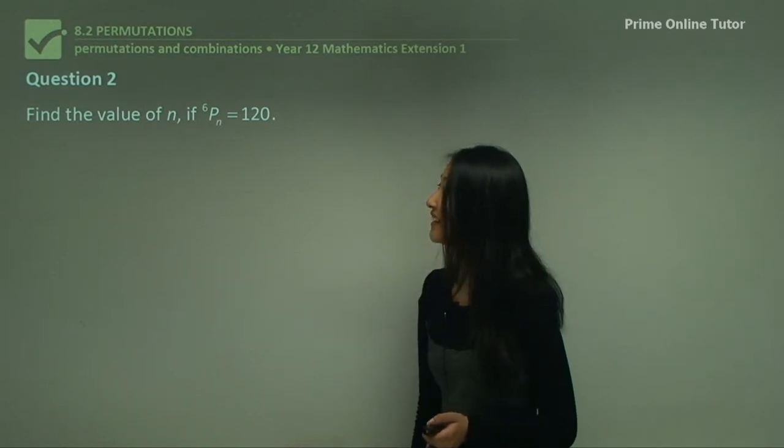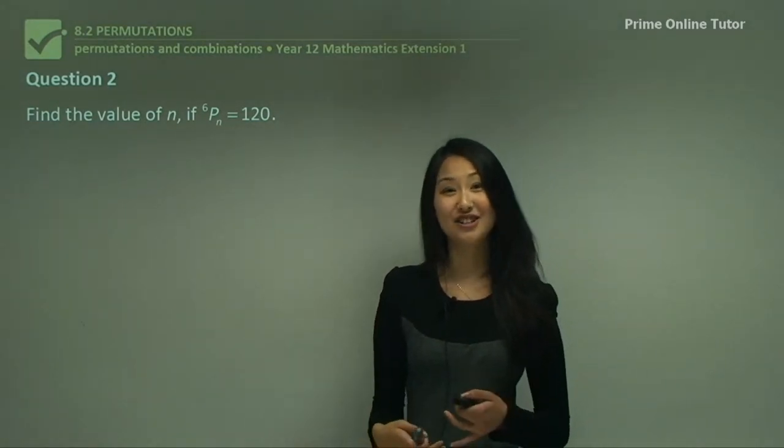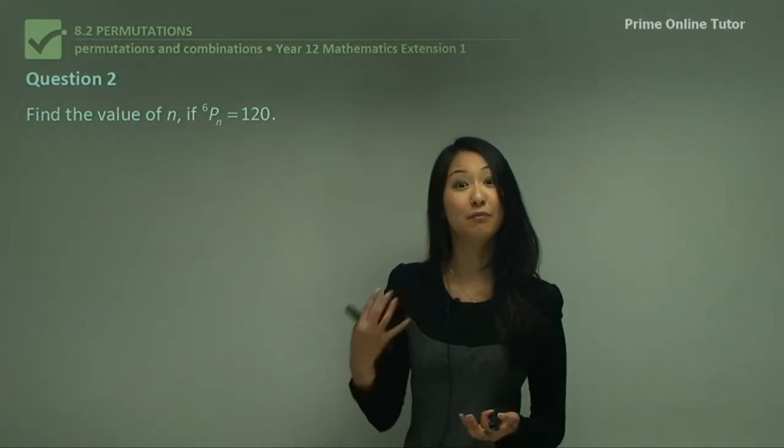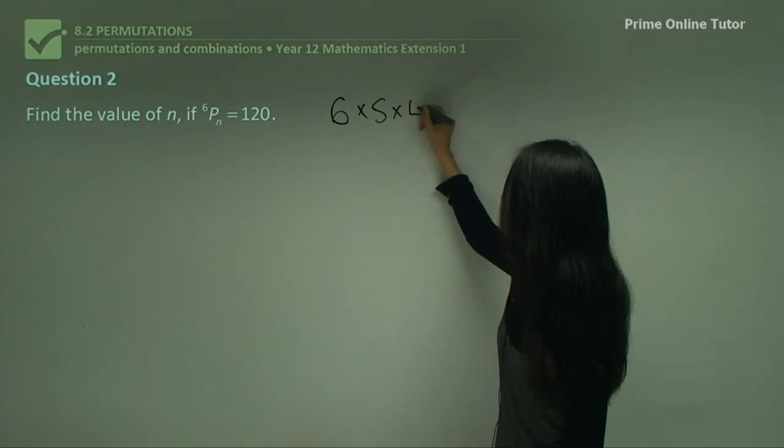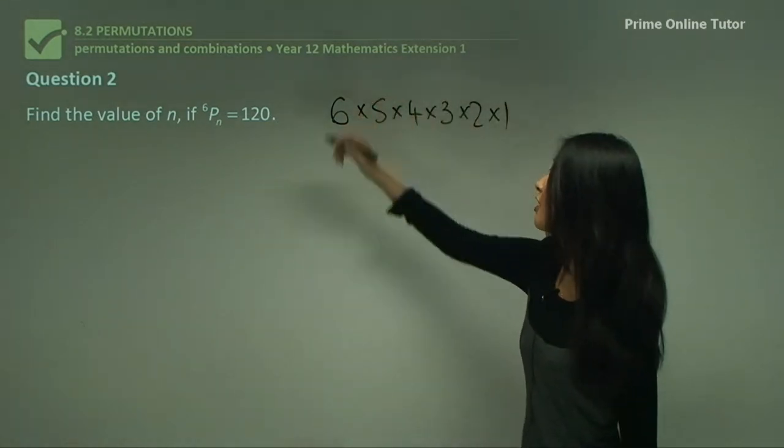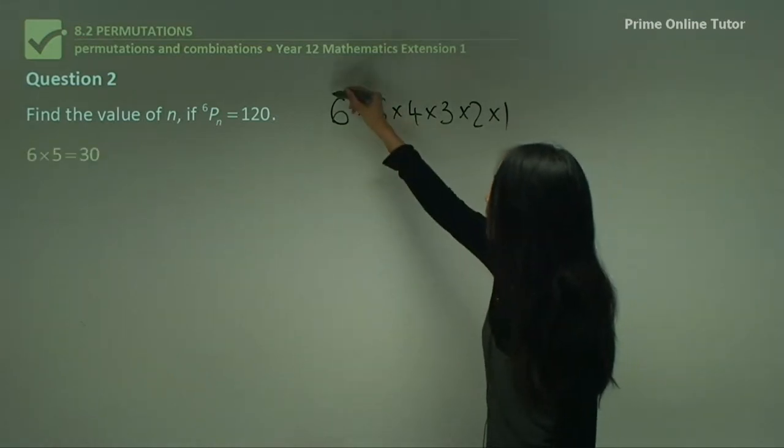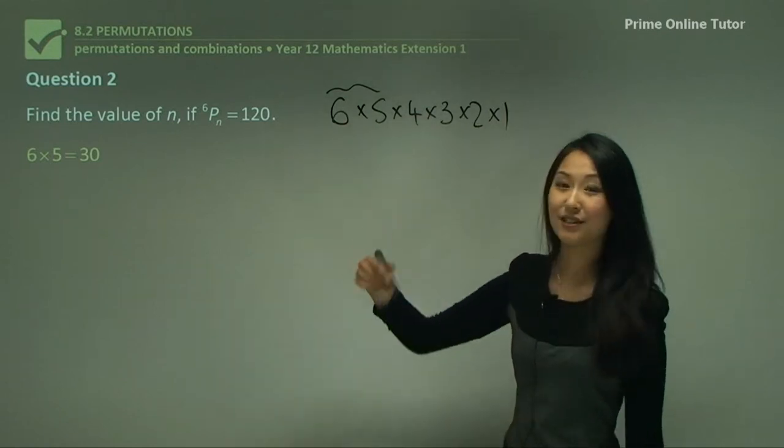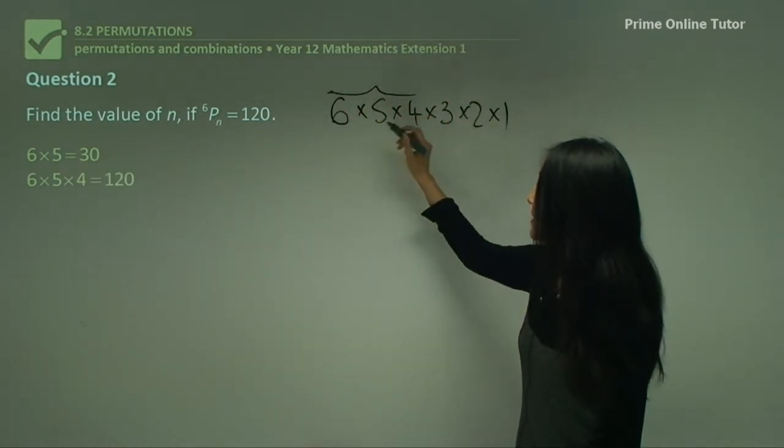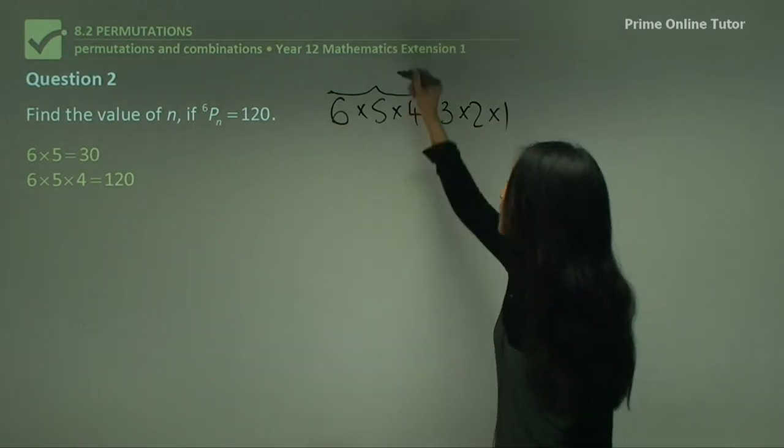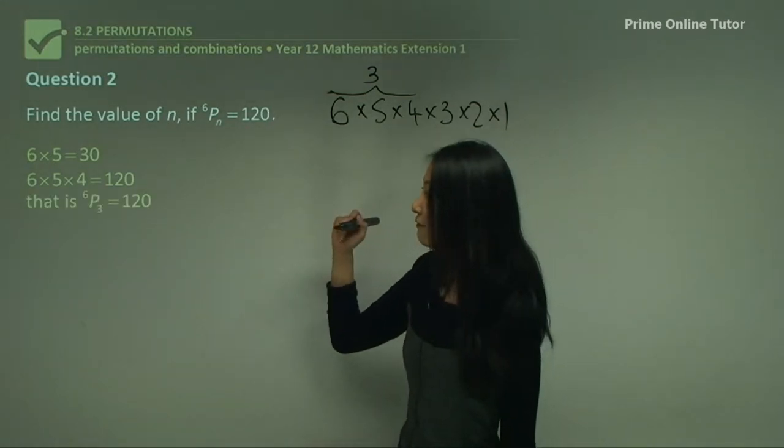Let's have a look at question 2. Here we want to find the value of n if ⁶Pₙ = 120. This is why you can't just know how to press the button on the calculator—you have to understand the concept of permutations. Over here, it means we have 6 factorial: 6×5×4×3×2×1, but we don't know how many numbers of these are being used to make 120. So we do a little bit of guess and check. First, 6×5 gives us 30, which is incorrect. Then we try the first three numbers: 6×5×4—that gives us 120.